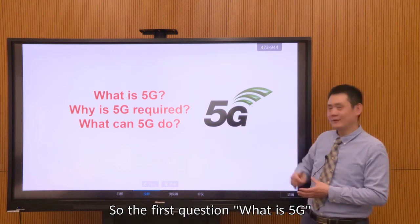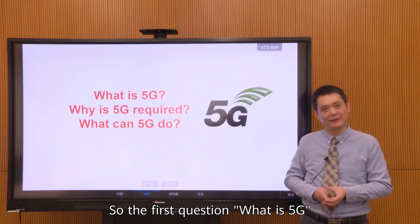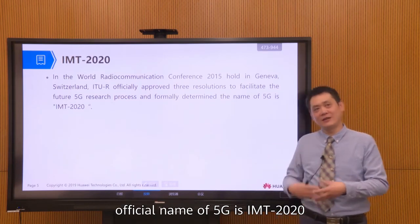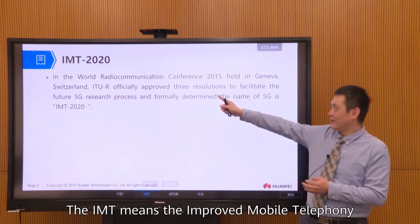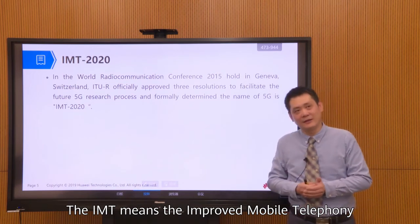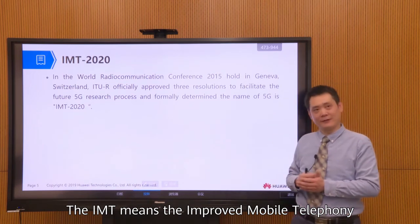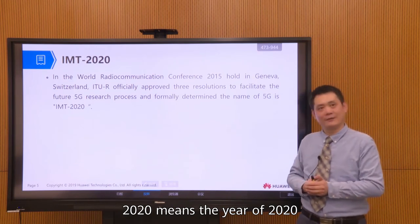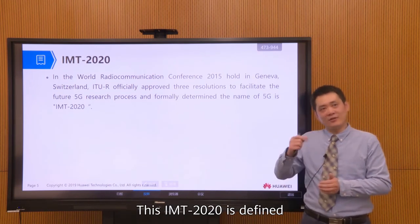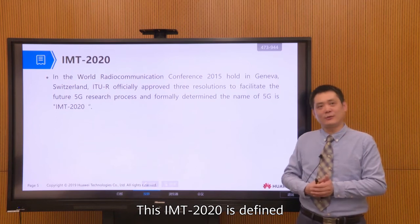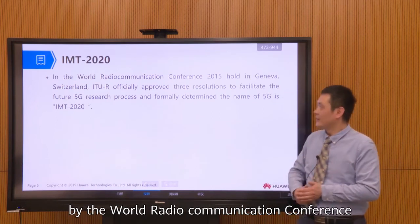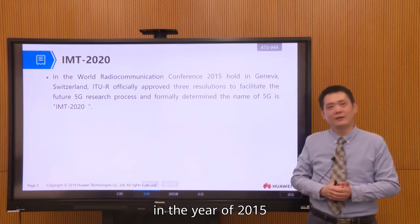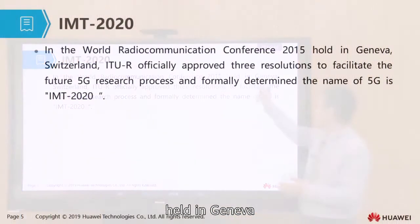So the first question: what is 5G? The official name of 5G is IMT 2020. IMT stands for Improved Mobile Telephony, and 2020 refers to the year 2020. This IMT 2020 was defined by the World Radio Conference in the year 2015, held in Geneva.